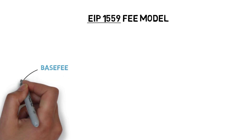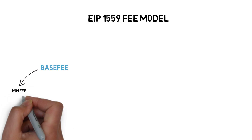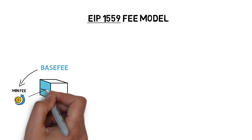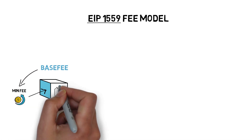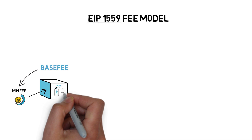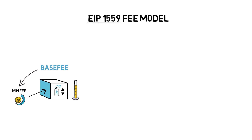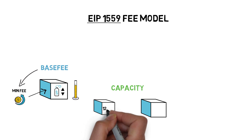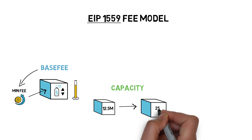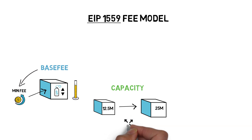EIP-1559 introduces a new concept of a base fee. The base fee represents the minimum fee that has to be paid by a transaction to be included in a block. The base fee is set per block and can be adjusted up or down depending on how congested the ETH network is. Another big part of EIP-1559 is an increase in network capacity achieved by changing the max gas limit per block from 12.5 million to 25 million gas — basically doubling the block size.